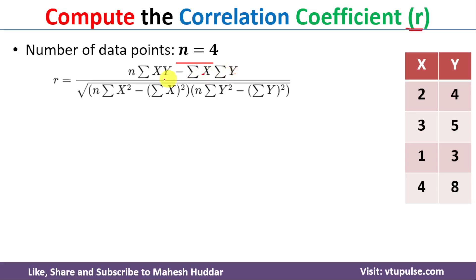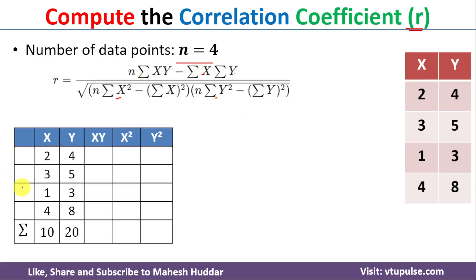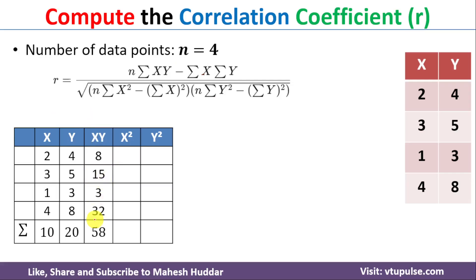We have only x and y columns, so we need to compute all these values. First, summation of x — we add all x values and get Σx = 10. Next, summation of y — we add all y values and get Σy = 20. For summation of xy, we multiply each x by its corresponding y to form a new column, then add all those values to get Σxy = 58.